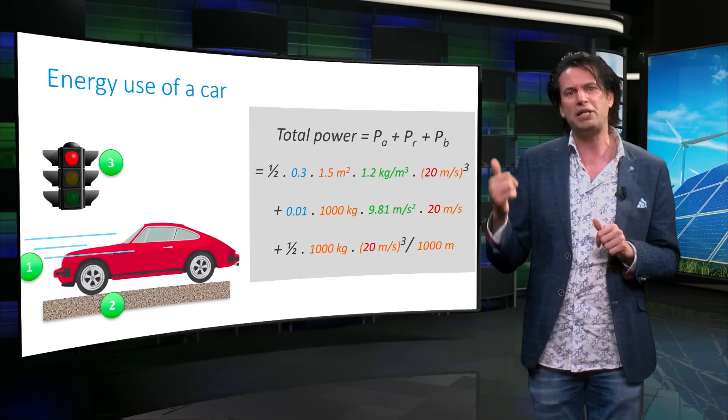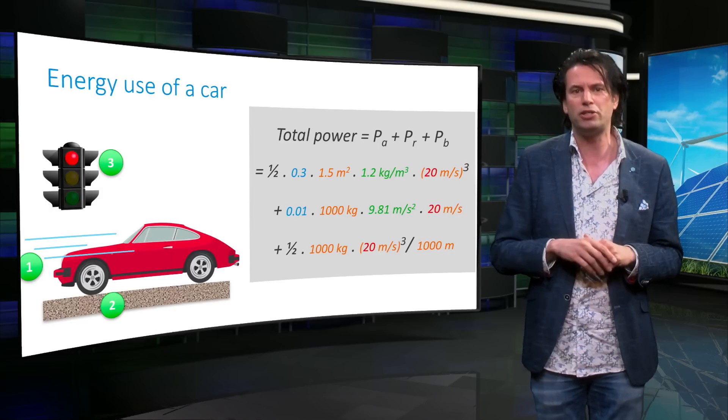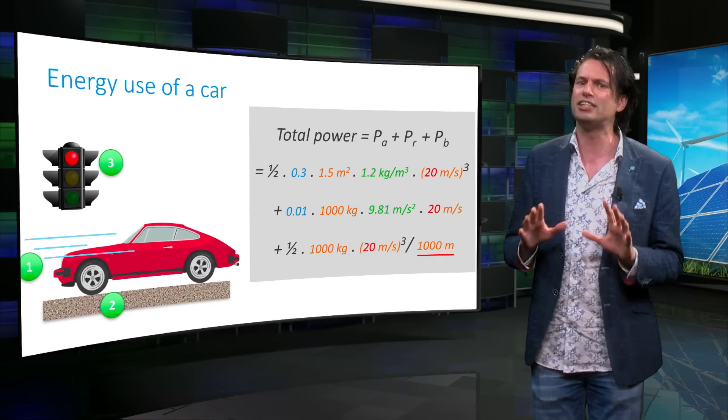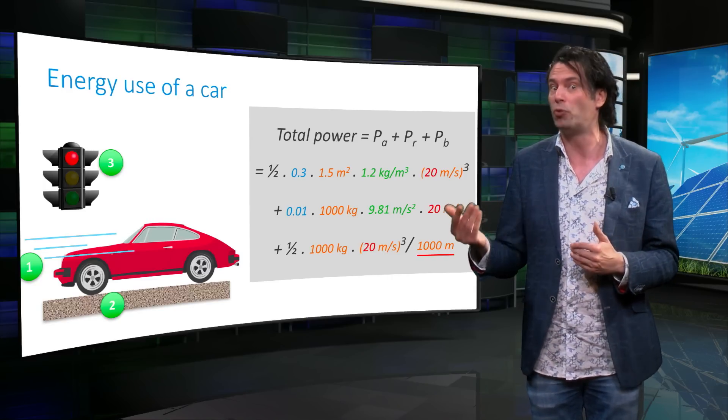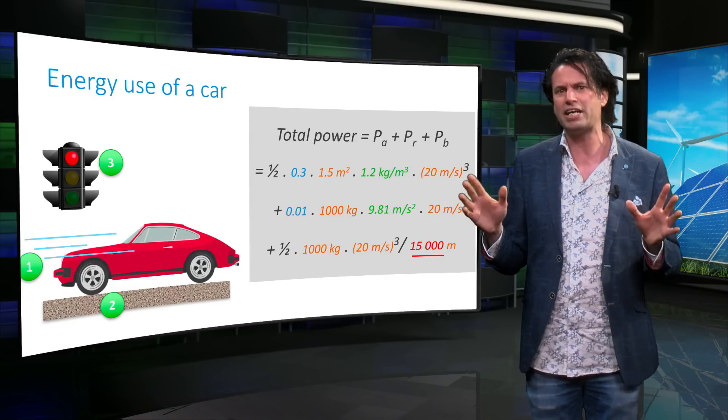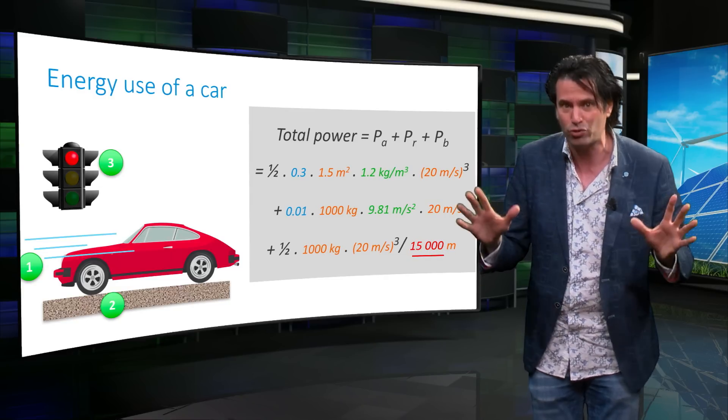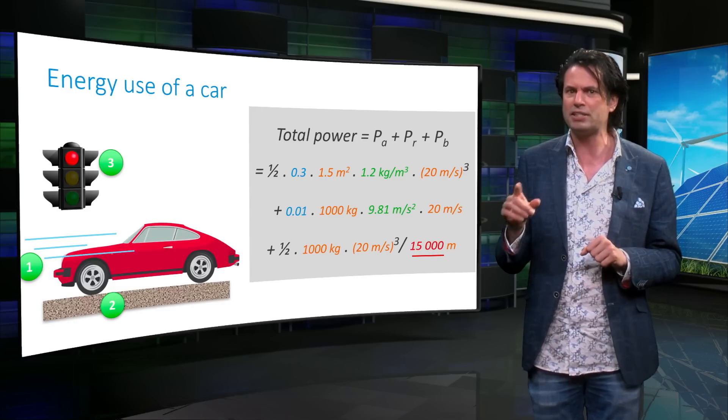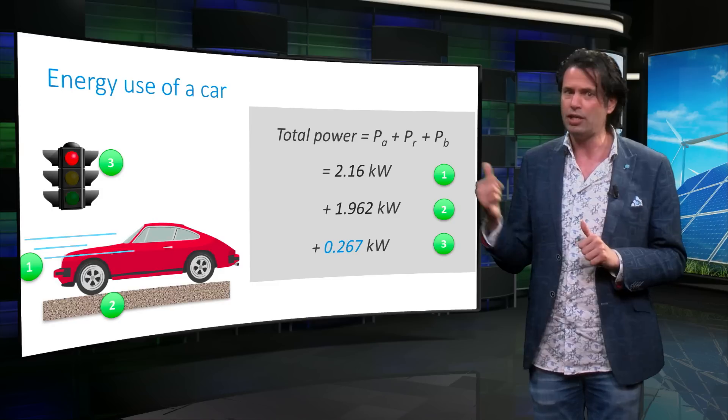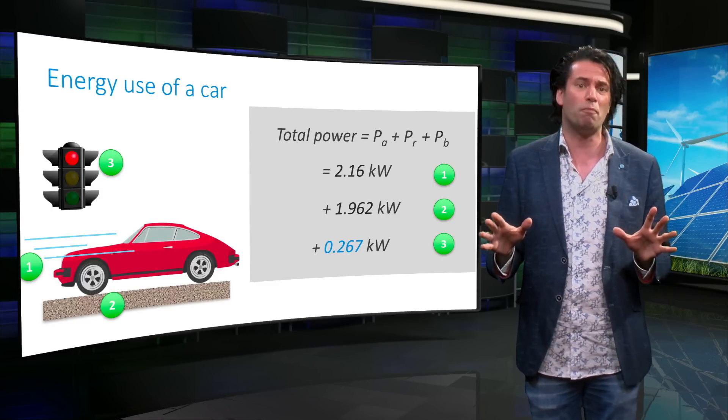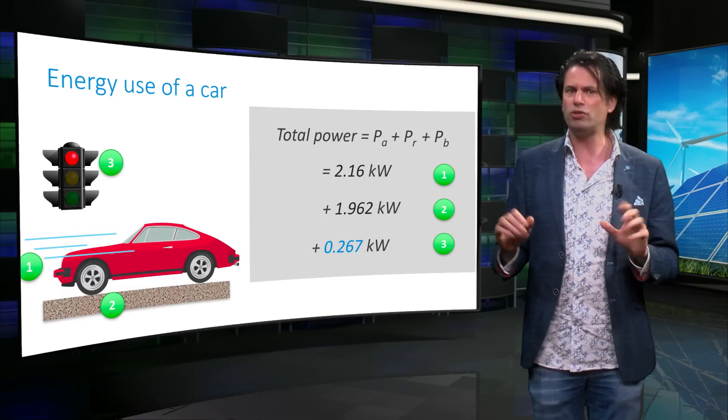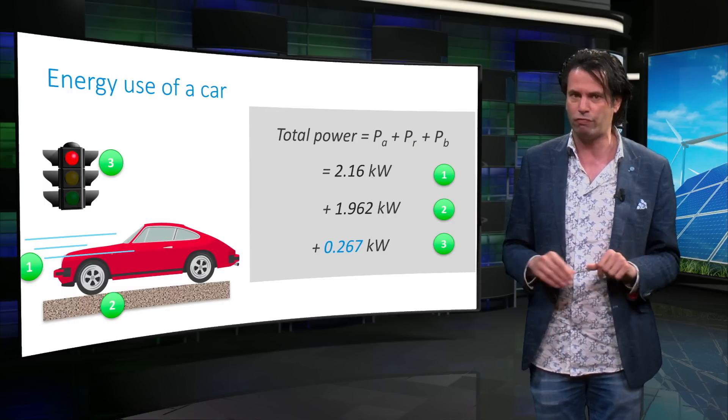Let us put the speed of the car back to the 20 meters per second as we used before. Let us now change the distance which the car travels before braking. Instead of stopping after 1000 meters, let us make it stop after 15,000 meters. What happens to the braking resistance now? As you can see, the braking resistance has reduced from 4 kilowatts to just 0.26 kilowatts, and is now the least of the three opposing forces.